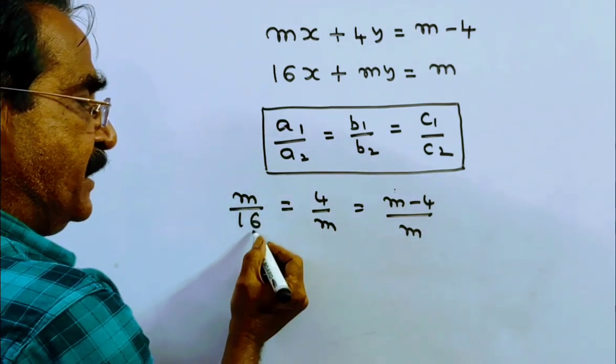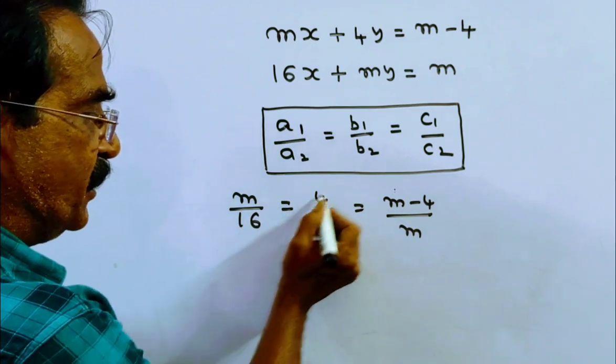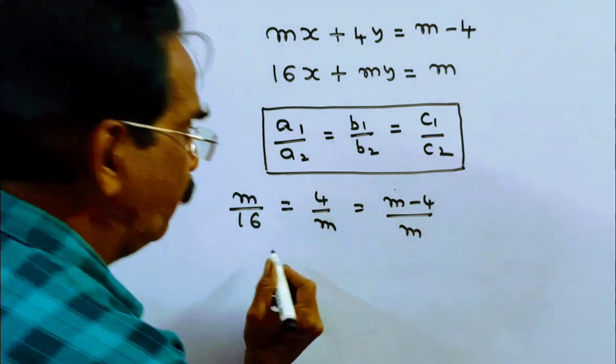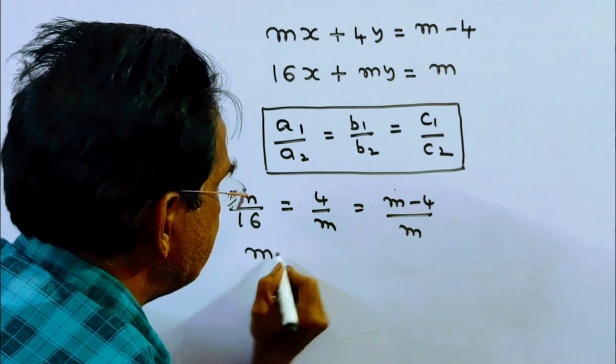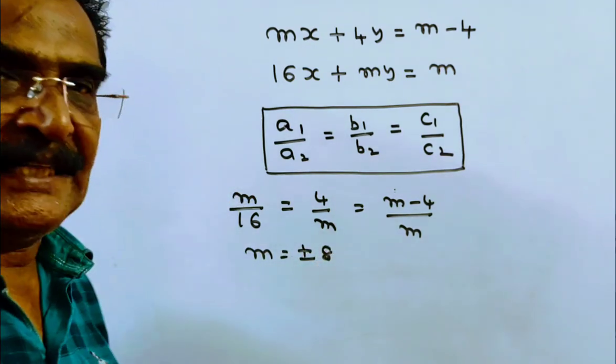Friends, if m by 16 is equal to 4 by m, m square is equal to 64, it implies m is equal to plus or minus 8.